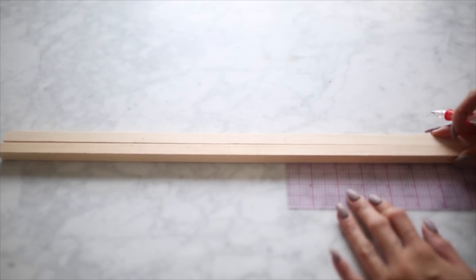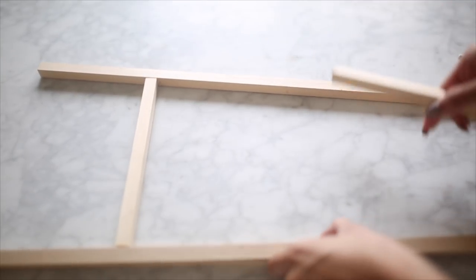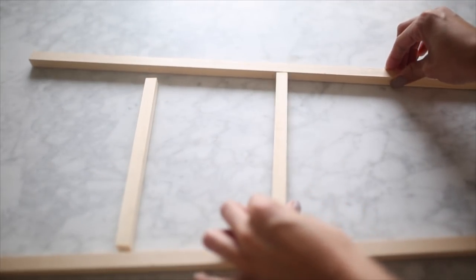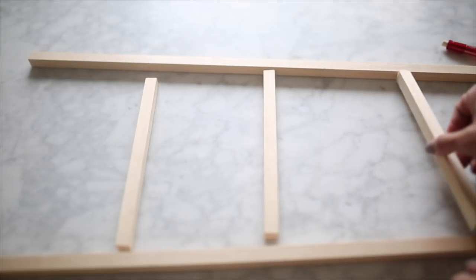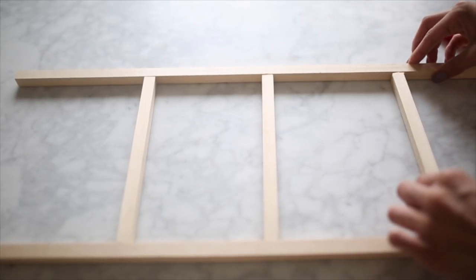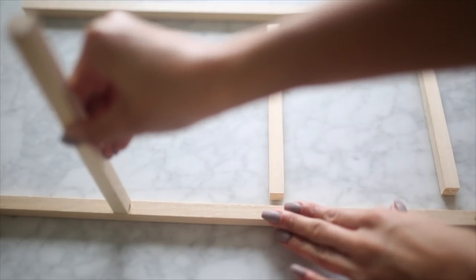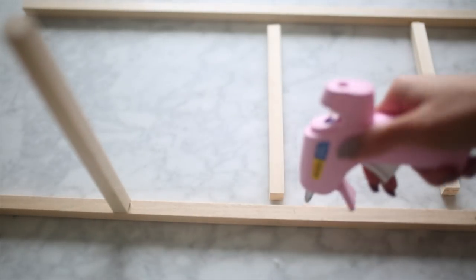Mark that on both sides of the wood that way you're even when you're gluing it. Here I'm just laying it out just to make sure that everything kind of lines up and it looks good, and it looks like it is going to make the formation of a ladder, because once you glue it you're kind of stuck.